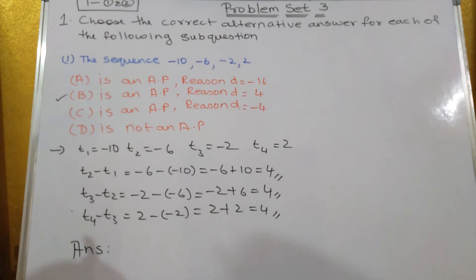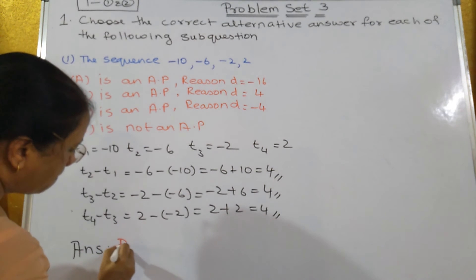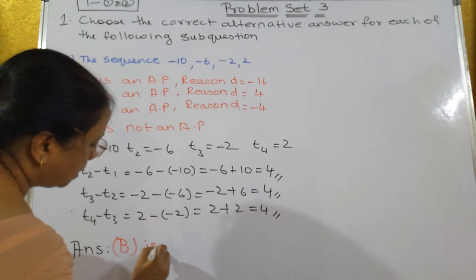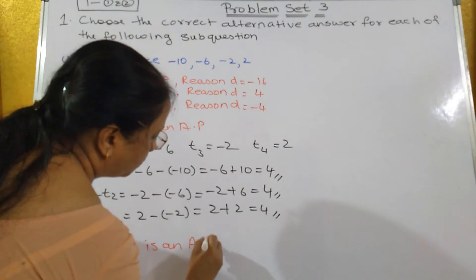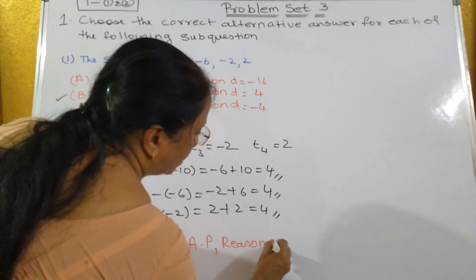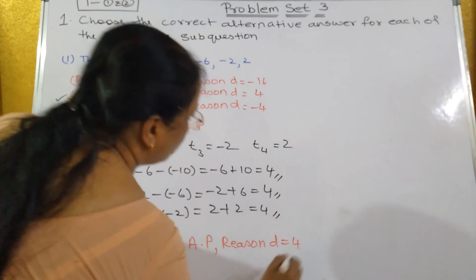So, the correct answer is B. The answer is: is an AP, reason D is equal to 4.